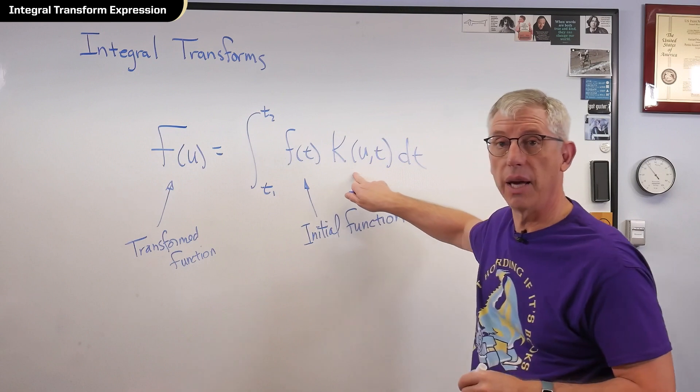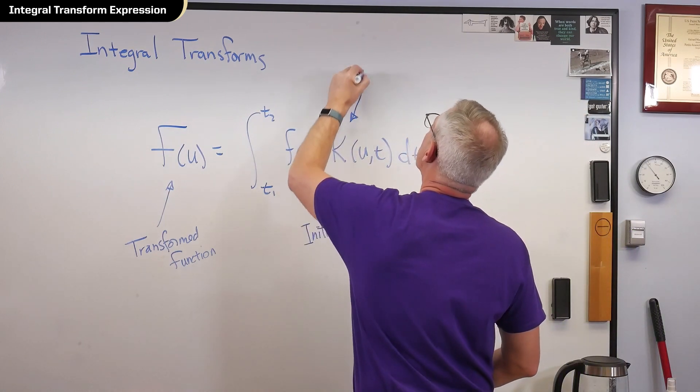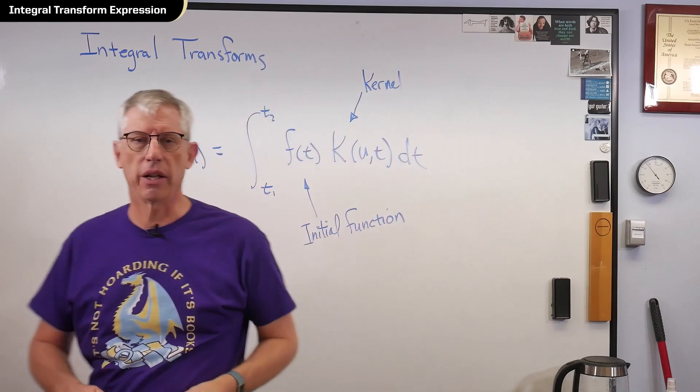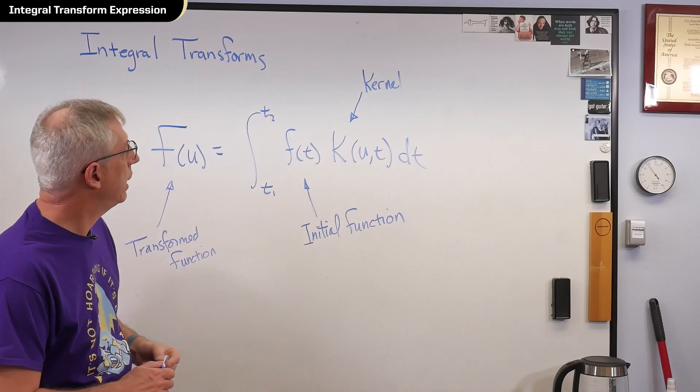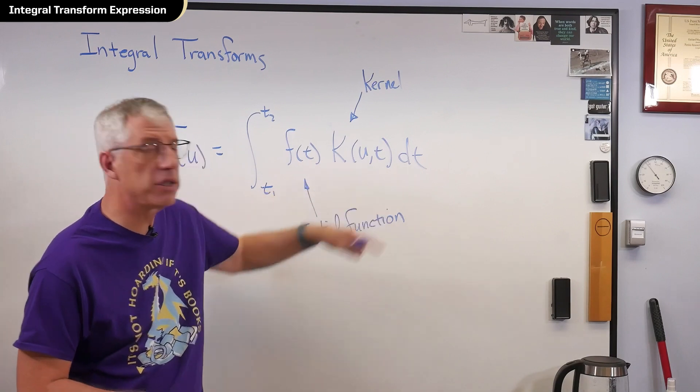And this thing here, k, this is called a kernel function. Not like an army colonel, a different kind of kernel. It's called a kernel function. All integral transforms look like this, and the difference is the kernel function.